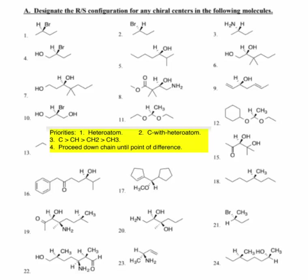To designate the R and S configuration of our chiral centers, first we're going to look for a heteroatom — anything other than carbon and hydrogen. Then I'm going to look for a carbon that is bonded to a heteroatom; that's the number two priority. Then I'm going to look at a carbon and see how many hydrogens it has bonded. The more hydrogens it has, the less likely it is to be bonded to something else. Then I'm going to go down the chain and find the point of difference.